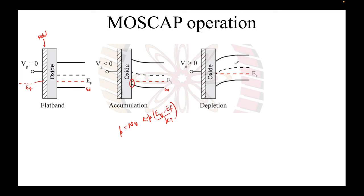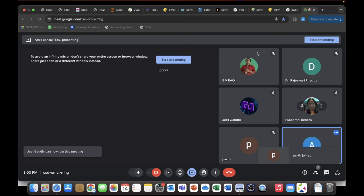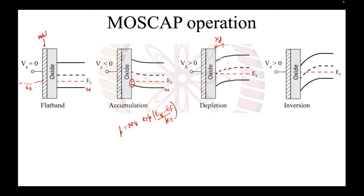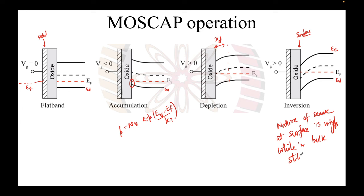On the other hand, if you apply a positive bias you repel the holes away, creating a depletion region x_d. If you increase the positive bias even further, the Fermi level in the bulk stays closer to E_v (p-type), but at the surface E_c becomes closer to E_f. The nature of the semiconductor at the surface has changed to n-type — this phenomenon is known as inversion.